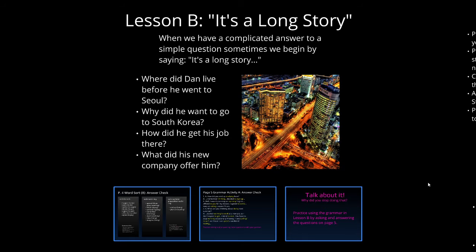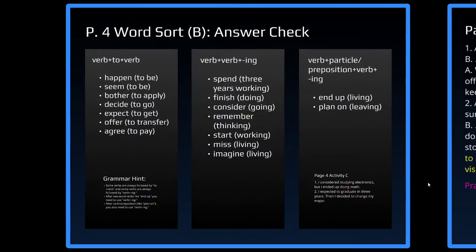Lesson B. We went through this pretty quickly last week. When we have a complicated answer to a simple question, sometimes we begin by saying 'it's a long story.' We're going to be using verbs that go with the infinitive (to + verb): happen to be, seem to be, bother to apply, decide to go, expect to get, offer to transfer, agree to pay. These verbs are not used with -ing — they're only used with the infinitive.